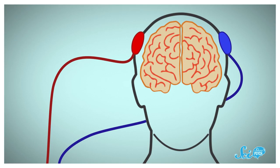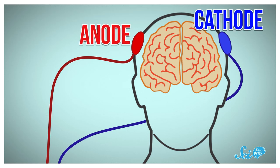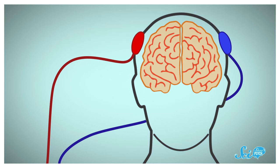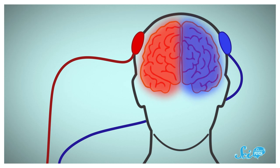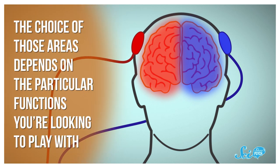A TDCS headset contains two electrodes, called the anode and the cathode. The idea is that the anode will boost the area of the brain beneath it, whereas the cathode will inhibit the area beneath it. The choice of those areas depends on the particular functions you're looking to play with.